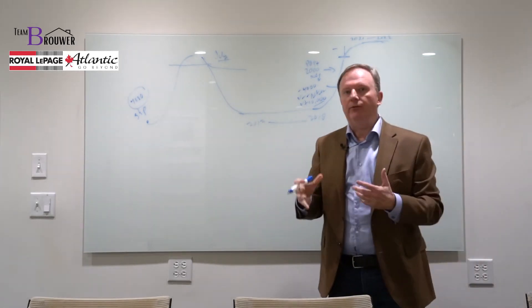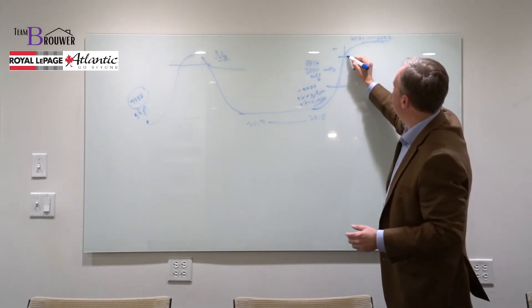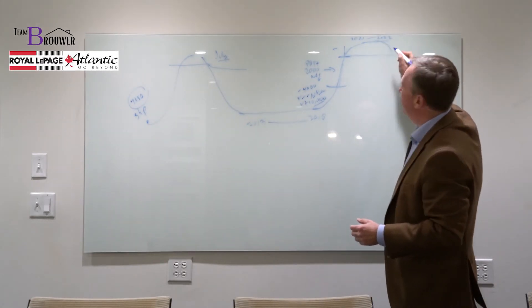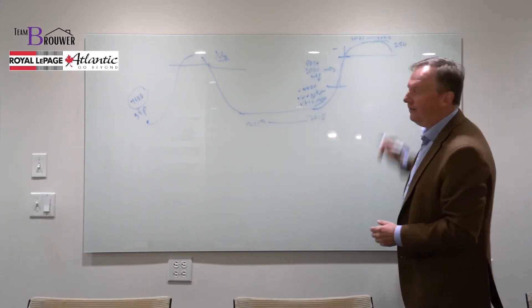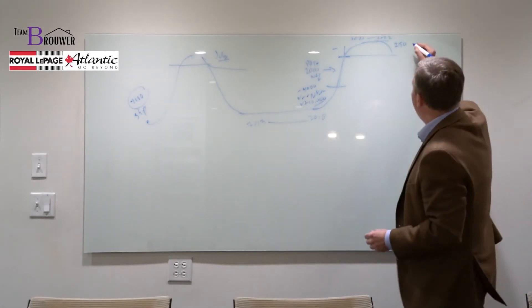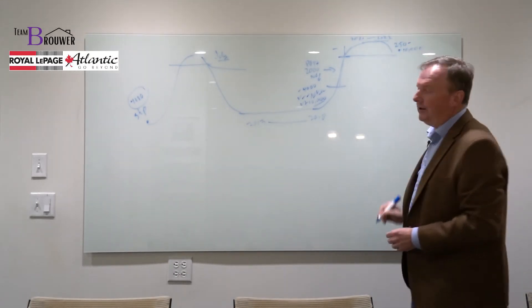And what that really means is we've achieved a very high probability for a seller to max out the value of their house because right now we only have 250 houses on the market. We have still 10,000 people a year moving to our marketplace.